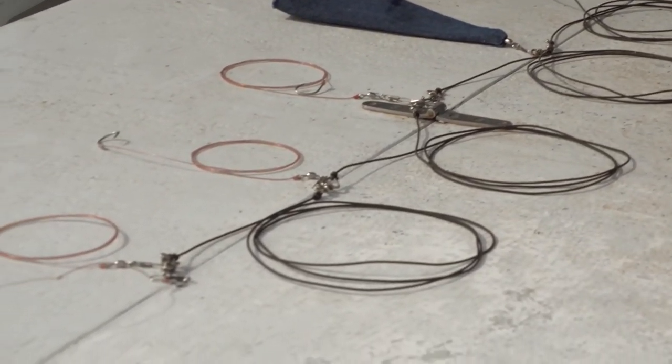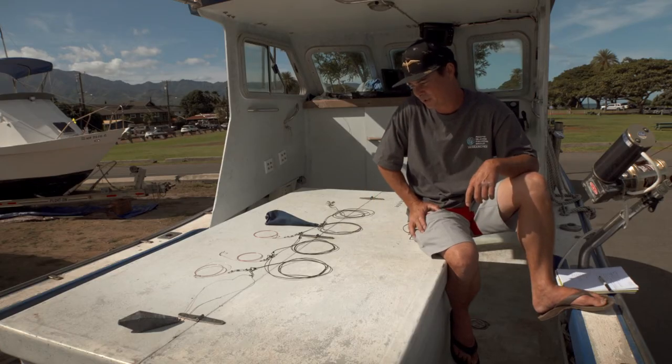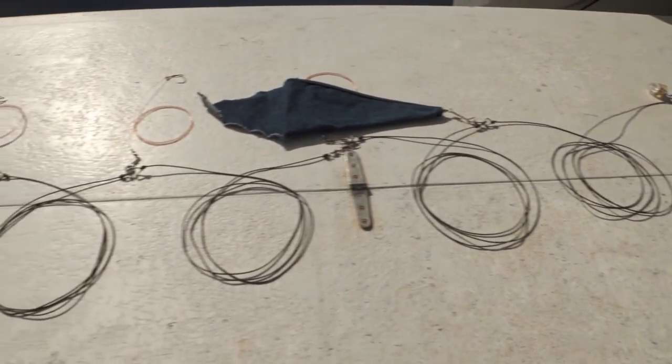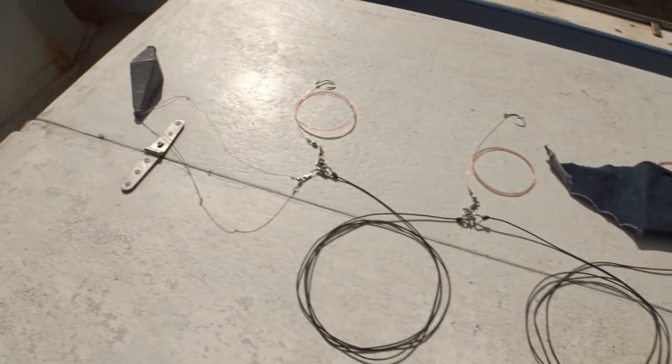But yeah, this is the kaka set. It's pretty much the go-to for most bottom fish species here in Hawaii.